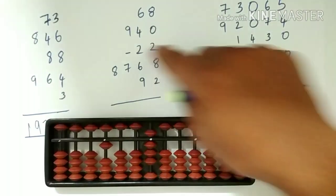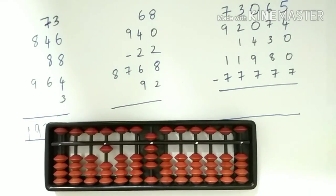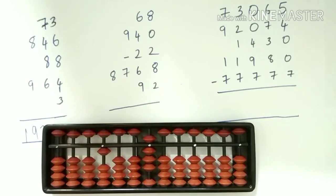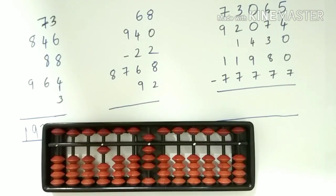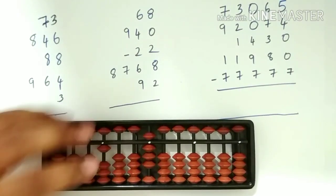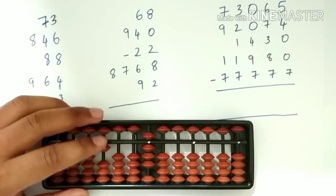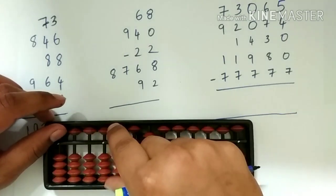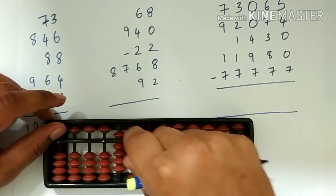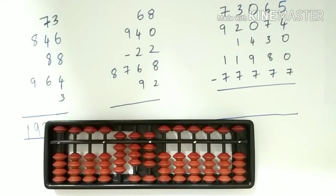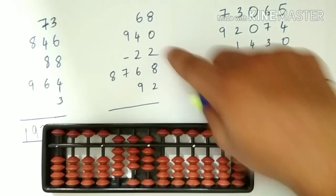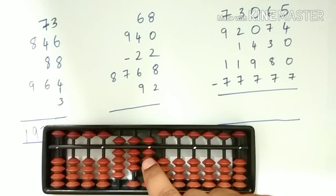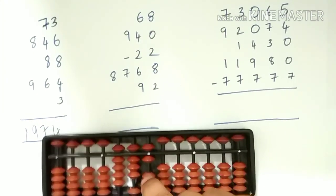Next minus 22. So we have to use big friends subtraction. Less the friend 10 and add the friend 8. Then again 2 on the unit slot — here we can subtract 2 directly.